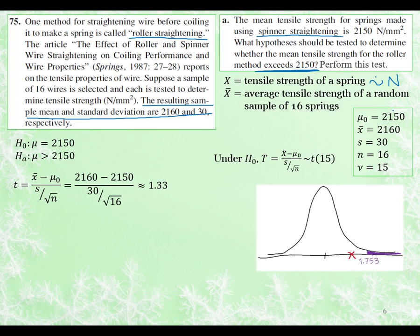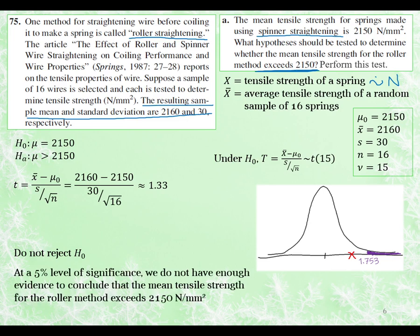And we can see very clearly that this value is not in the rejection region. So that means that we do not reject the null hypothesis. And now again, we are going to do our conclusion in terms of the alternative and in words that anyone can understand. So we mention our significance level, that's our first component. At a 5% level of significance, we don't have the evidence because we didn't reject the null hypothesis. So we don't have evidence that supports the alternative. So we don't have evidence to conclude that the mean tensile strength for the roller method exceeds 2150. So you can see here, this is in terms of my alternative. We never give the conclusion in terms of the null because we're actually testing for the alternative. So our conclusion has to be in terms of the alternative.